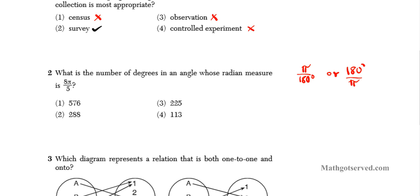We have 8π over 5. We want the π gone — I want to be left with degrees. Which of these two conversion factors will enable me to cancel out this π and be left with a degree measure? You can clearly see that multiplying by 180 degrees over π is the correct choice. The reason is you want the π to cancel out — this π cancels out with that.